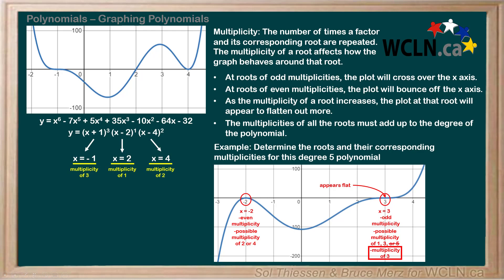which means that the root at x equals negative 2 must have a multiplicity of 2, so that the multiplicities of the roots add up to the degree, 5.